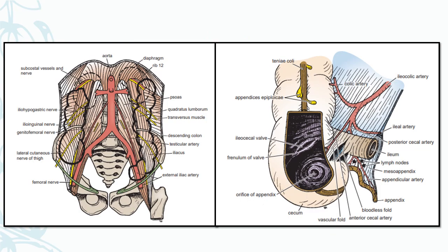In this diagram we can see the cecum, the opening for the ileum, and the ileum coming into the cecum at the level of the cecocolic junction where the cecum becomes continuous with the ascending colon. Then we have the posterior medial opening for the appendix into the cecum. Internally, we can see the ileocecal valve where the ileum opens into the cecum, and the orifice of the appendix where the appendix opens internally into the cavity of the cecum.